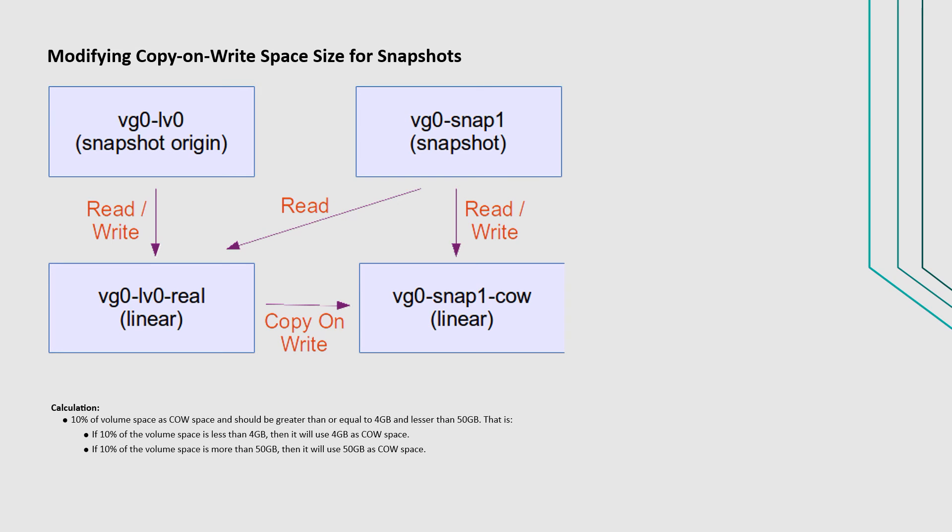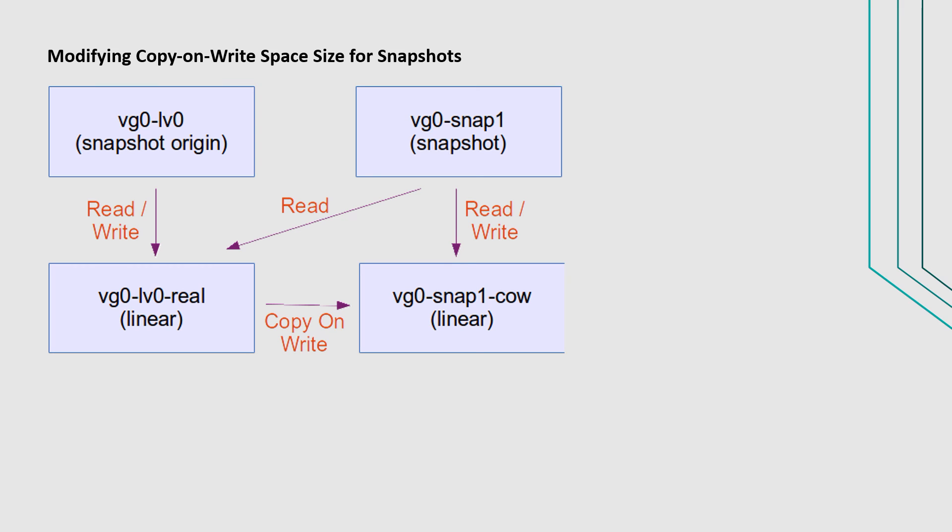If 10% of the volume space is more than 50 GB, then it will use 50 GB as COW space. This percentage also includes any free space requirement specified by your hardware vendor. However, the snapshot of the DDB hosted on a thin logical volume grows dynamically and shares space from the thin pool if the required free space is not available.